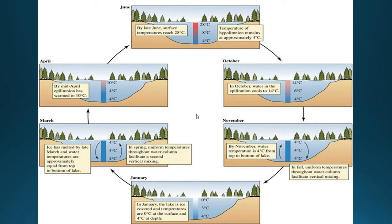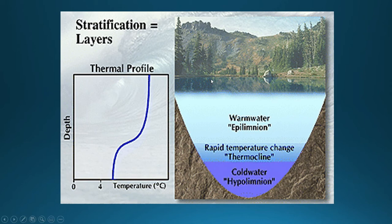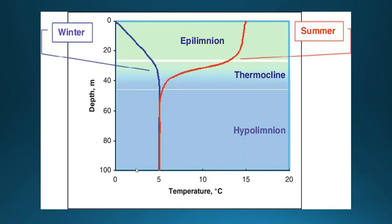Just as we showed oxygen profiles over depth, you can do a temperature profile over depth. Warm water in the epilimnion, rapid temperature change at the thermocline — almost like a cubic function — then cold water in the hypolimnion. That's stratification. In summer (shown in red), the epilimnion shows a slight decrease but is pretty much uniform — also a mixed layer — then a rapid change at the thermocline, then a pretty uniform hypolimnion. In winter, ice is at the surface; 0°C is still less dense than 4°C, so the thermocline is inverted — the water warms up through the thermocline until you reach 4°C.